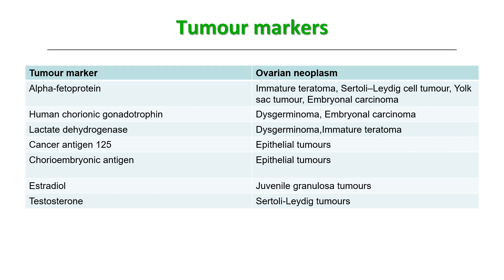Serum oestradiol is raised in juvenile granulosa tumors — easy to remember, as granulosa tumors secrete oestrogen. Sertoli-Leydig cell tumors release testosterone, so testosterone will be raised. Some of these are easy to remember; for the rest, you can make a mnemonic.